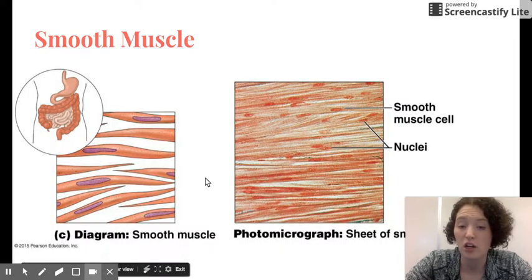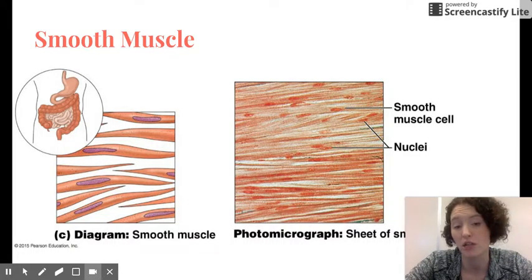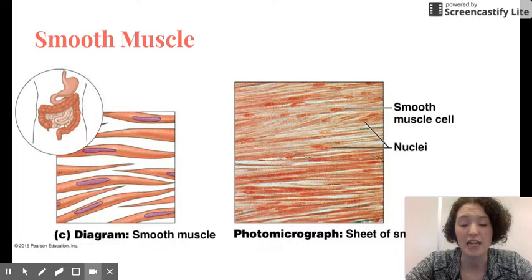So the big difference in muscles are, in terms of looks, are whether or not they have striations, whether or not they have one nucleus or multi-nuclei, and if they're voluntary or involuntary. So you should know all of those things about muscle tissue.